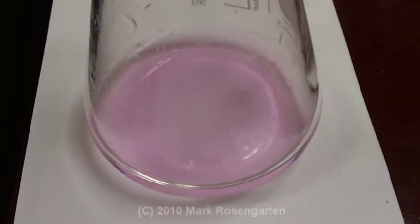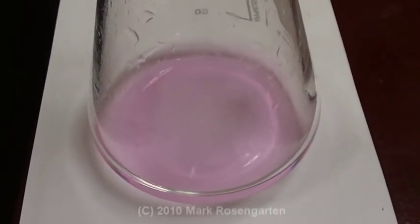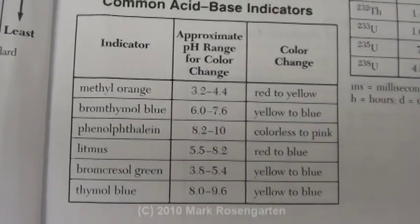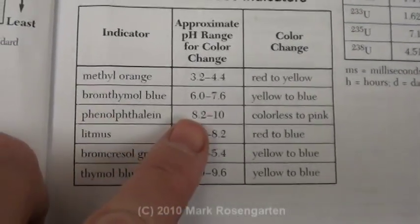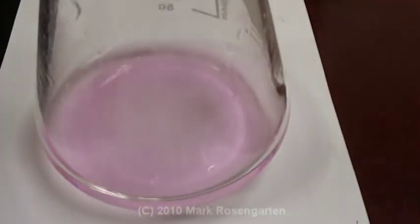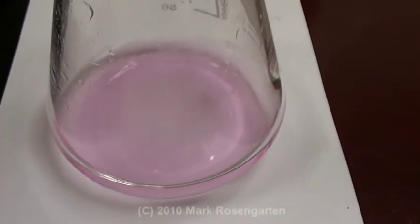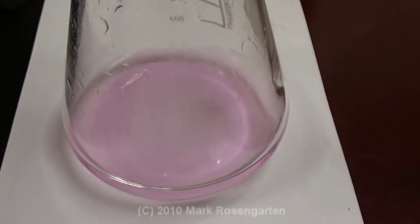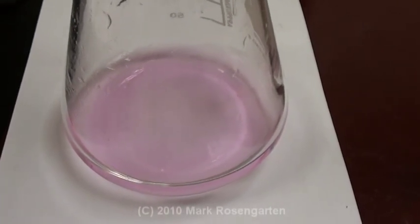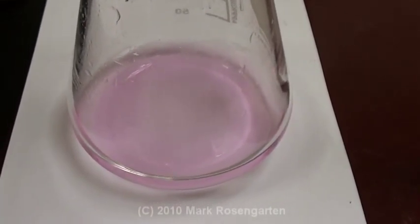And this is the perfect shade of pink that you should get after titrating. Now remember, phenolphthalein doesn't start turning color until a pH of 8.2. So what you have in here is not a neutral solution, but the difference in volume between a pH of 8.2 and a pH of 7 is so tiny that it works.